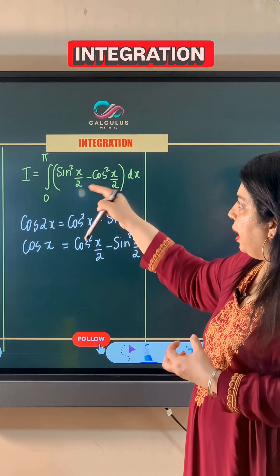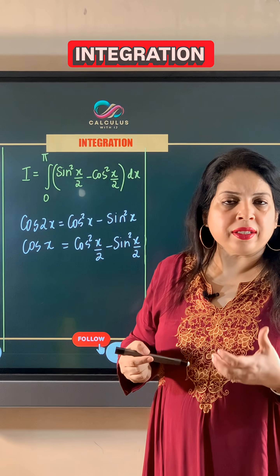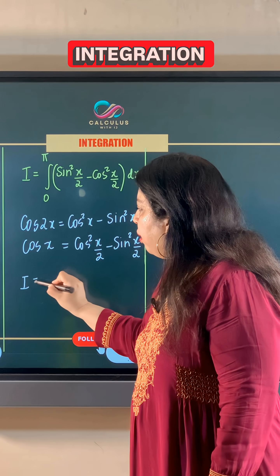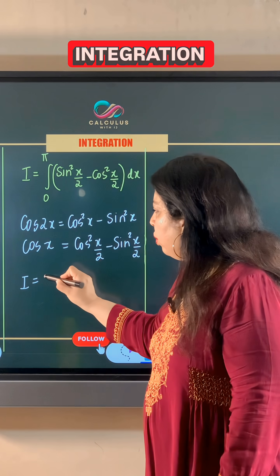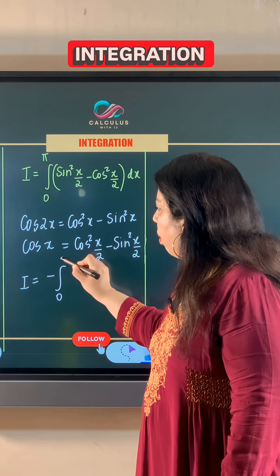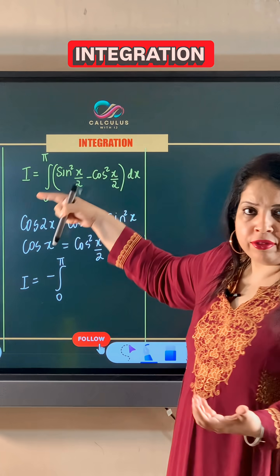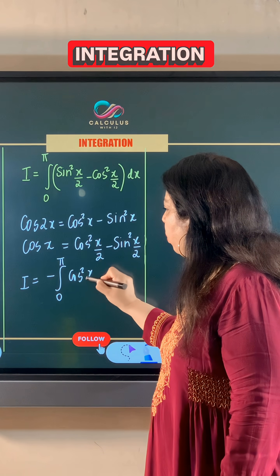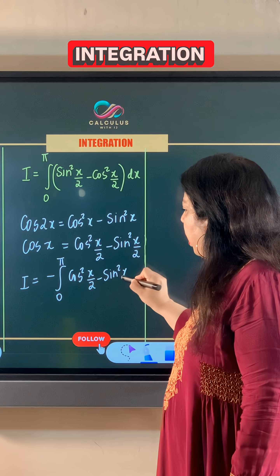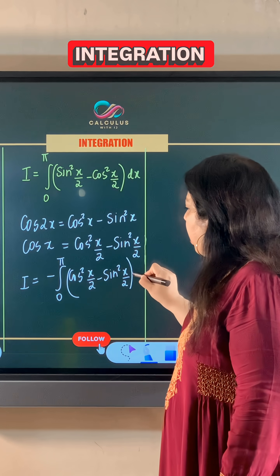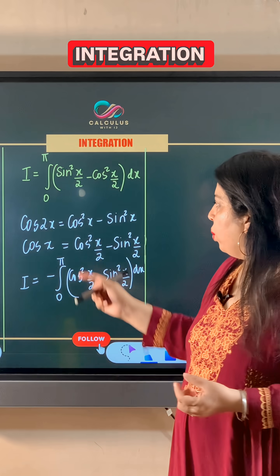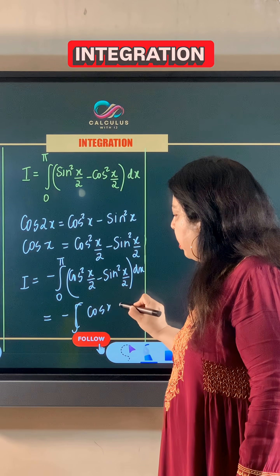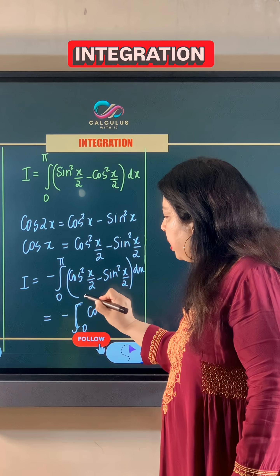This integrand is not in the standard form of cos²(x/2) minus sin²(x/2), so let us rewrite it in standard form. We take negative one as a common factor, which reverses the terms, giving us cos²(x/2) minus sin²(x/2). Using our derived identity, this equals negative cos x, with limits of integration from 0 to π.